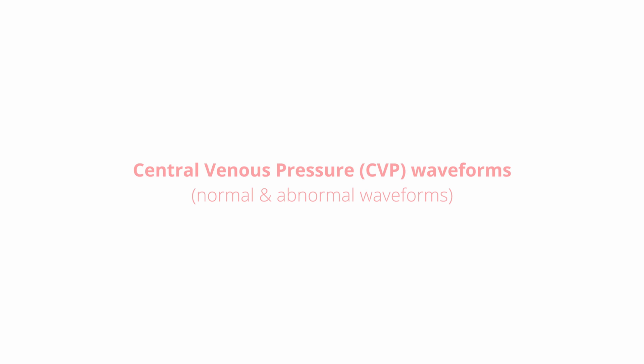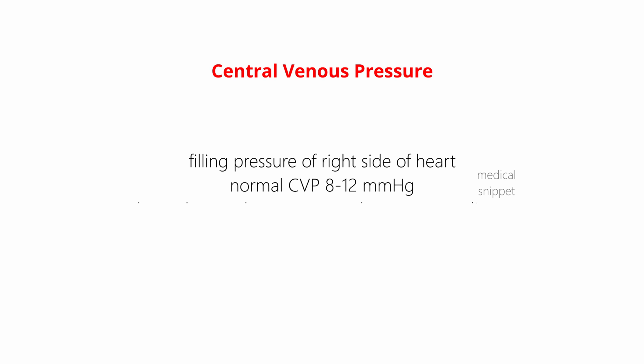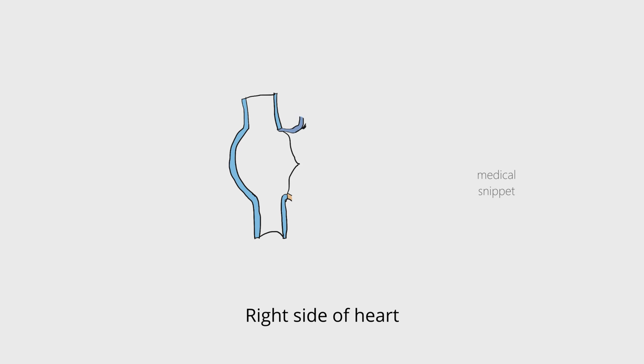Hi, this is Dr. Karthik from Medical Snippet. In this video, let's discuss central venous pressure tracings. Central venous pressure represents the filling pressure of the right side of the heart. Normal central venous pressure ranges from 8 to 12 millimeters of mercury. This value is altered by volume status and venous compliance. Central venous pressure is usually measured at the superior vena cava and the right atrial junction.